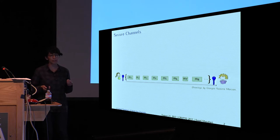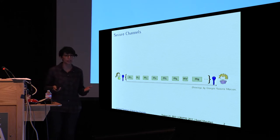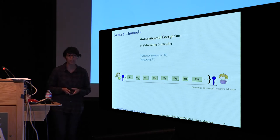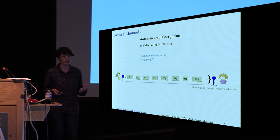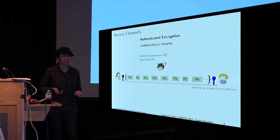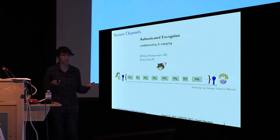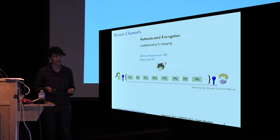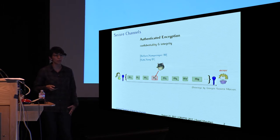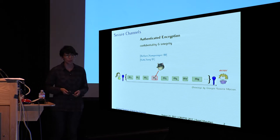An essential primitive in cryptography to realize secure channels is authenticated encryption, because it provides both confidentiality and integrity. Confidentiality means intuitively that the adversary should not be able to figure out what messages are being sent in clear, and integrity means that the adversary should not be able to forge a message without the receiver noticing it.